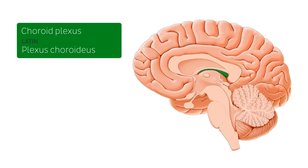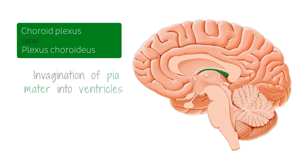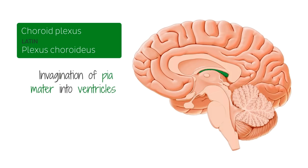The choroid plexus is part of the ventricular system of the brain, which is the system responsible for the production and circulation of cerebrospinal fluid, or CSF. The choroid plexus is a richly innervated invagination of pia mater into the four ventricles of the brain.